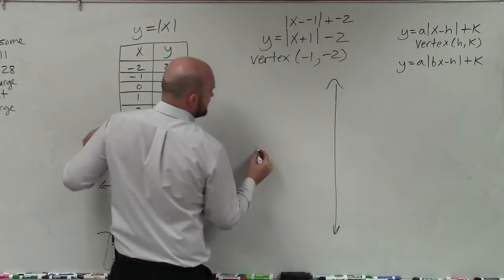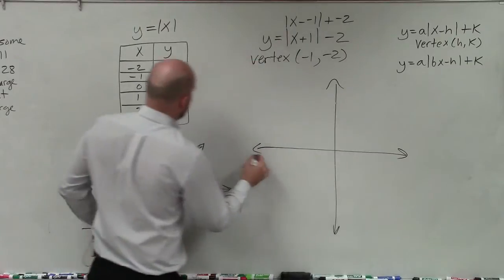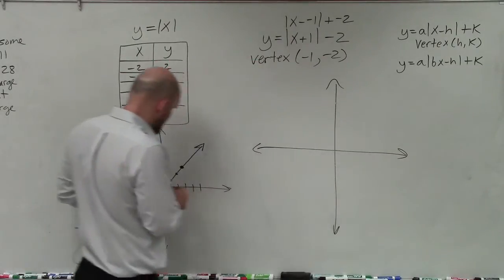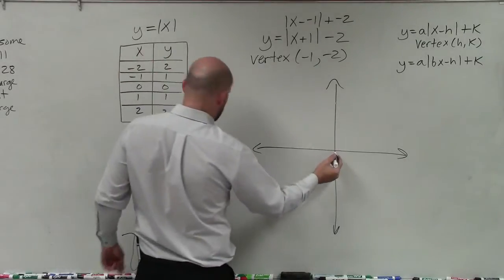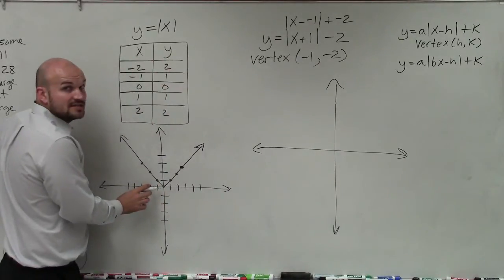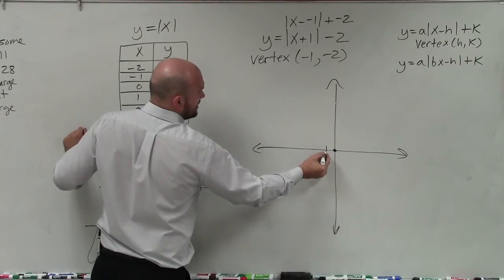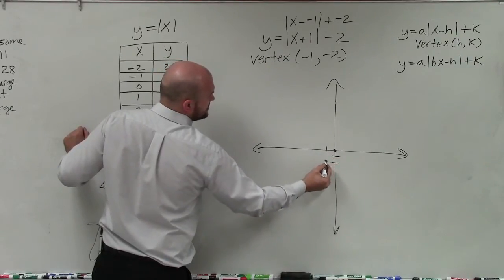Now when graphing this, you can obviously recreate a whole new table as I did like for the parent graph. But basically what I like to do is take my vertex and transform my vertex. The vertex for the parent graph starts at 0, 0. So what I'm basically doing is moving that over one unit to the left and then down two units.